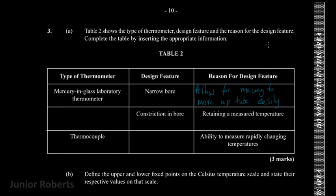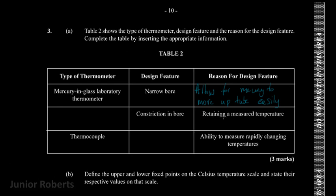The next design feature listed is a constriction in the bore, and the reason for that is for retaining a measured temperature. The thermometer that has a constriction in the bore is the clinical thermometer. The purpose of the constriction is to retain the measured temperature — in hospitals, you need time to read the temperature, so the constriction prevents the mercury from running back down into the bulb, allowing you to measure the temperature accurately.